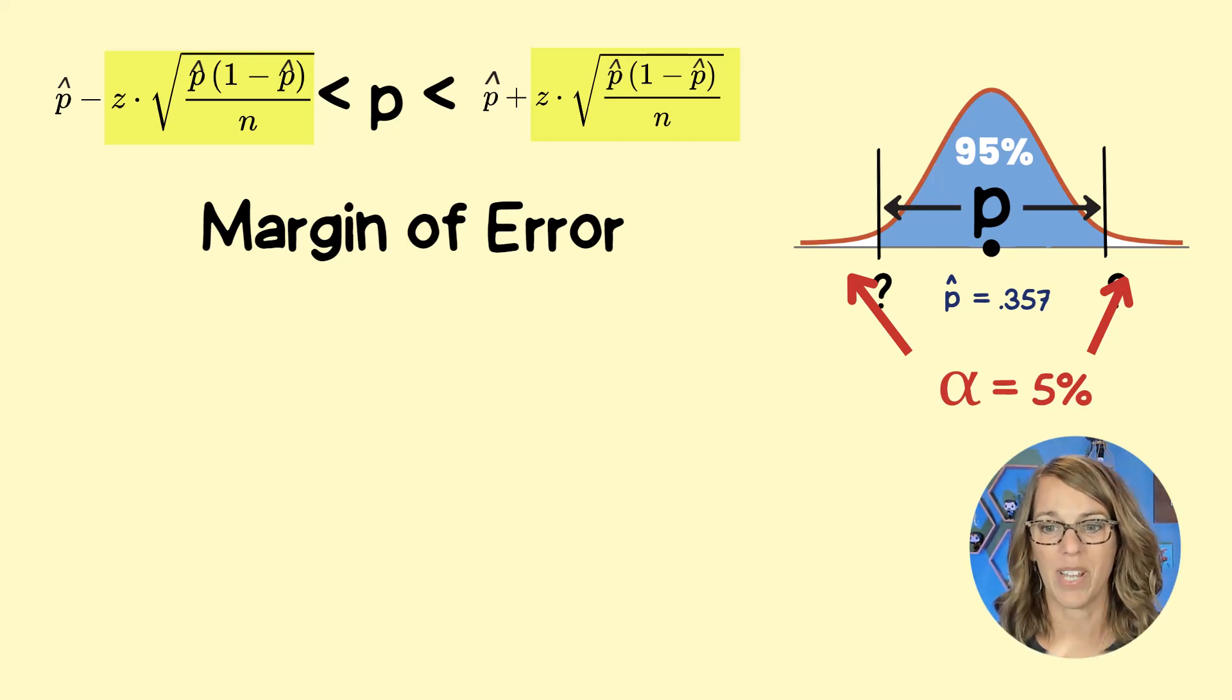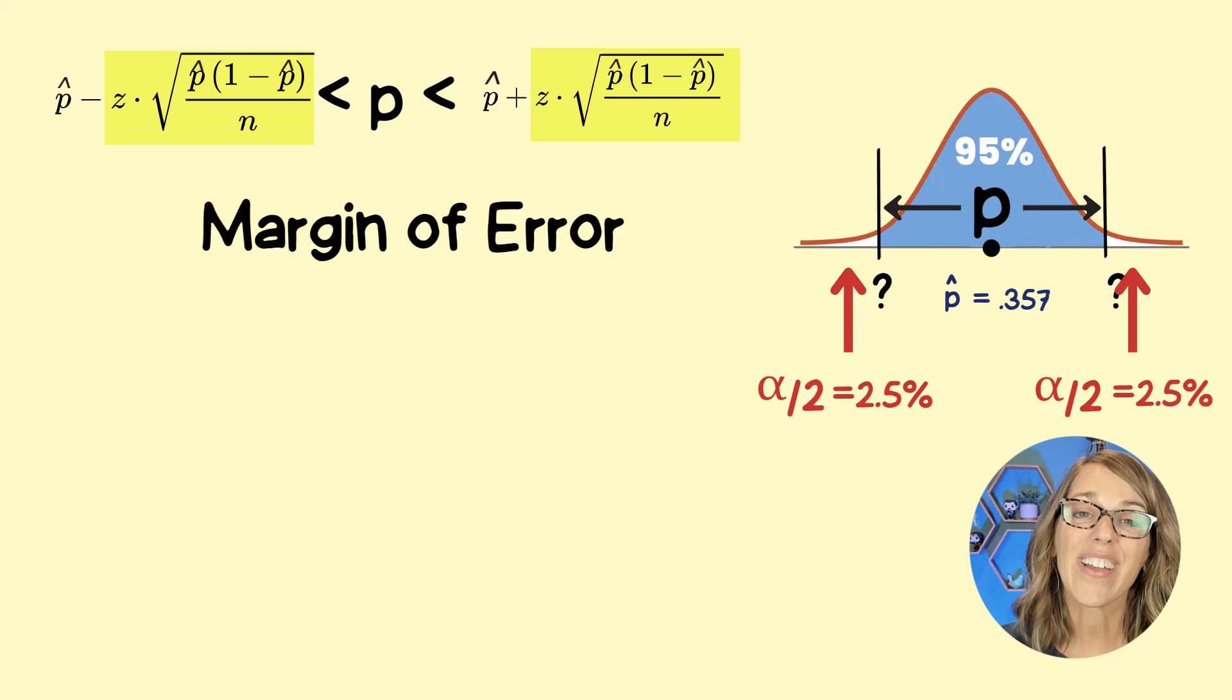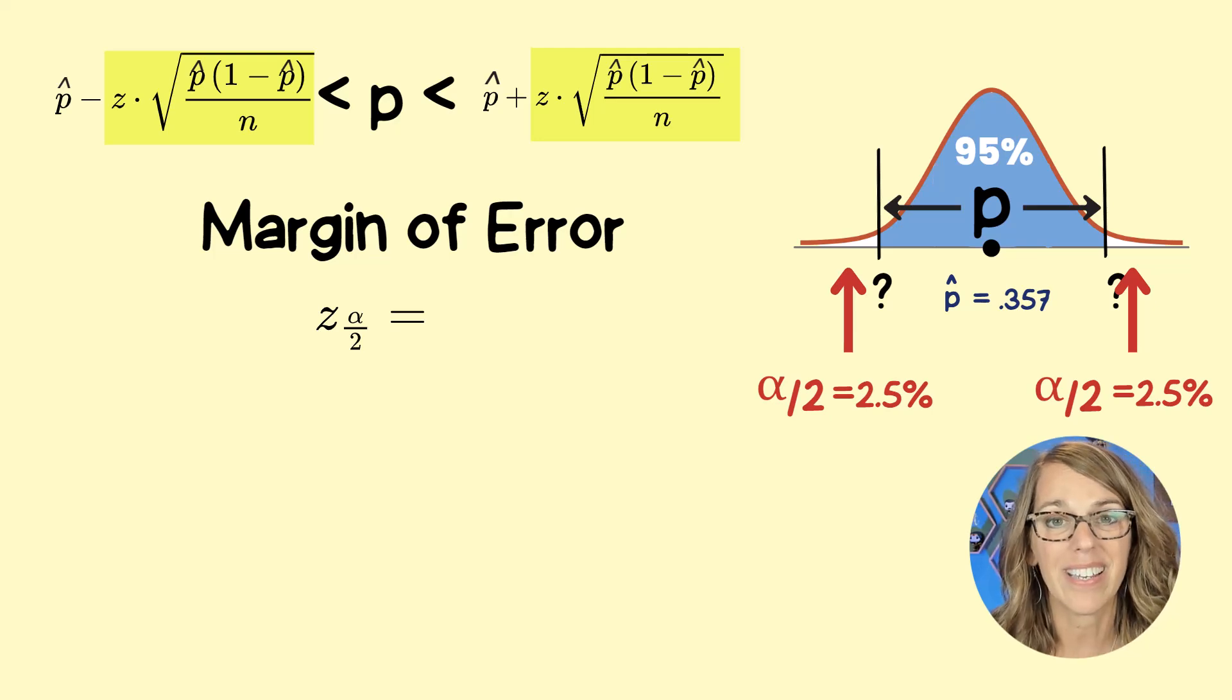Again, this is just so you can use whatever table you've got. And the area in an individual tail alpha divided by 2 is 2.5%. And that's why in a lot of these formulas, you'll see Z labeled as Z alpha over 2.